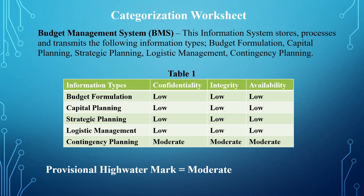The same applies to integrity — integrity was documented as moderate, meaning there is going to be a serious, significant adverse effect to the system or business mission should there be unauthorized access to contingency planning. For availability, it was also documented as moderate, meaning there is going to be a significant adverse effect should there be a disruption of access to contingency planning information.